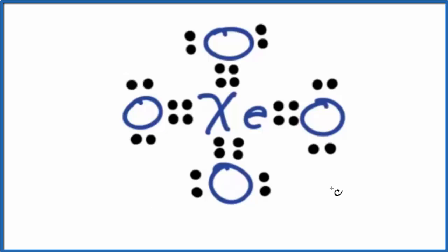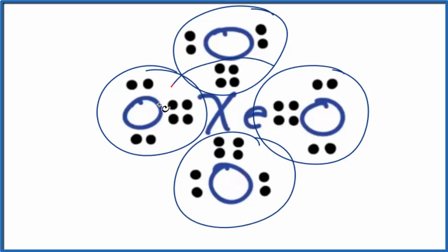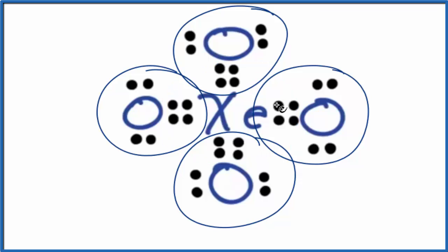We have our Lewis structure, and we can imagine we have four oxygen atoms bonded to the central xenon. The central xenon has more than eight valence electrons, but that's okay — it can have an expanded octet. These four oxygen atoms are going to push away from each other and be as far away as they can while still connected to the xenon. That's what will give us our molecular geometry for XeO4.